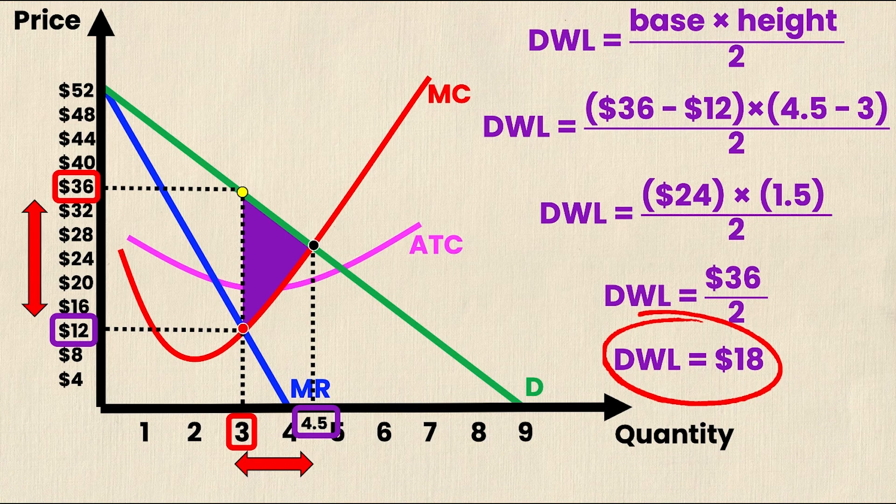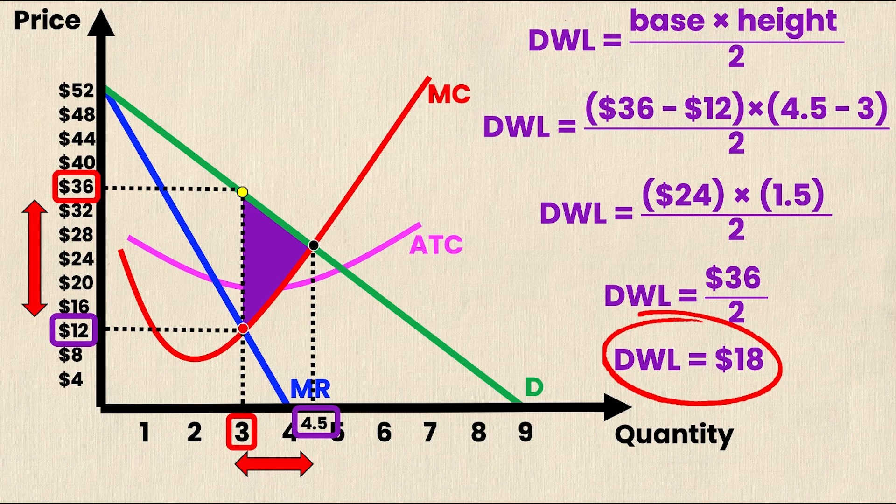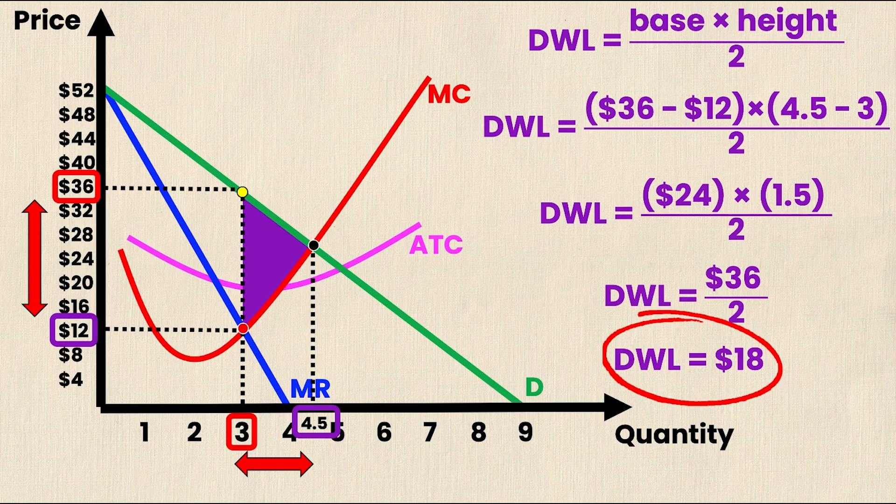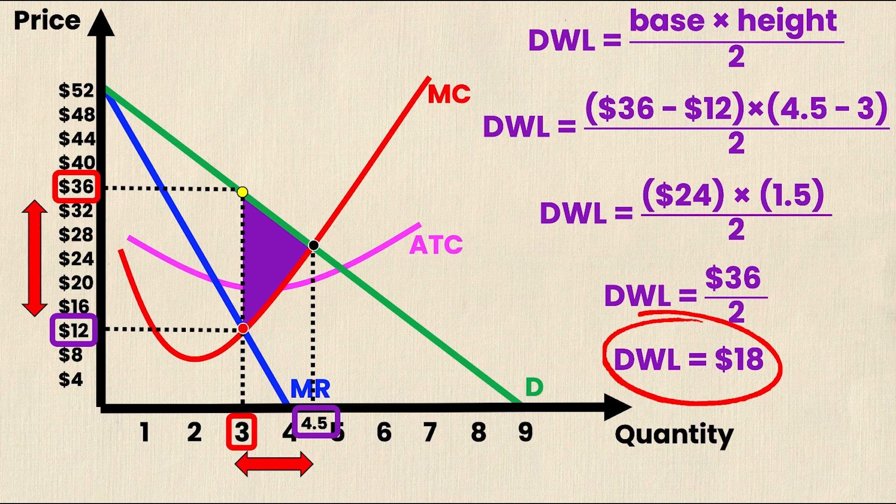Once again, that's represented by the purple triangle between the intersection of the marginal revenue and marginal cost curves, the intersection of the marginal cost and the demand curve, and finally, the price that the monopolist charges at, which can be found by equating marginal revenue and marginal cost, and then following it up in a straight line until you reach the demand curve.